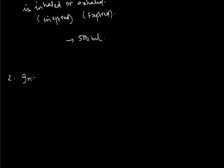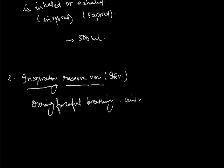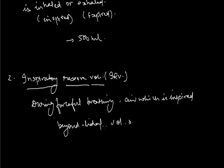The second is Inspiratory Reserve Volume, or IRV — the air which is inspired forcefully, beyond the tidal volume. During forceful breathing, a person inspires more than the normal 500 ml tidal volume. That extra amount inspired is the inspiratory reserve volume, which is approximately 3000 ml.